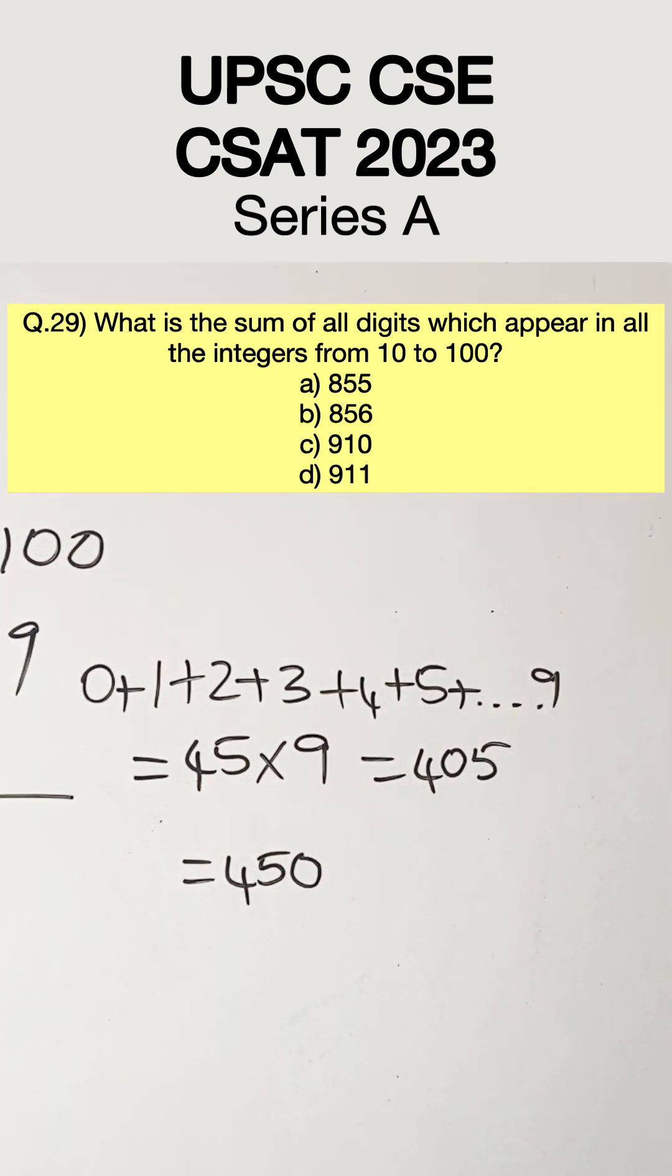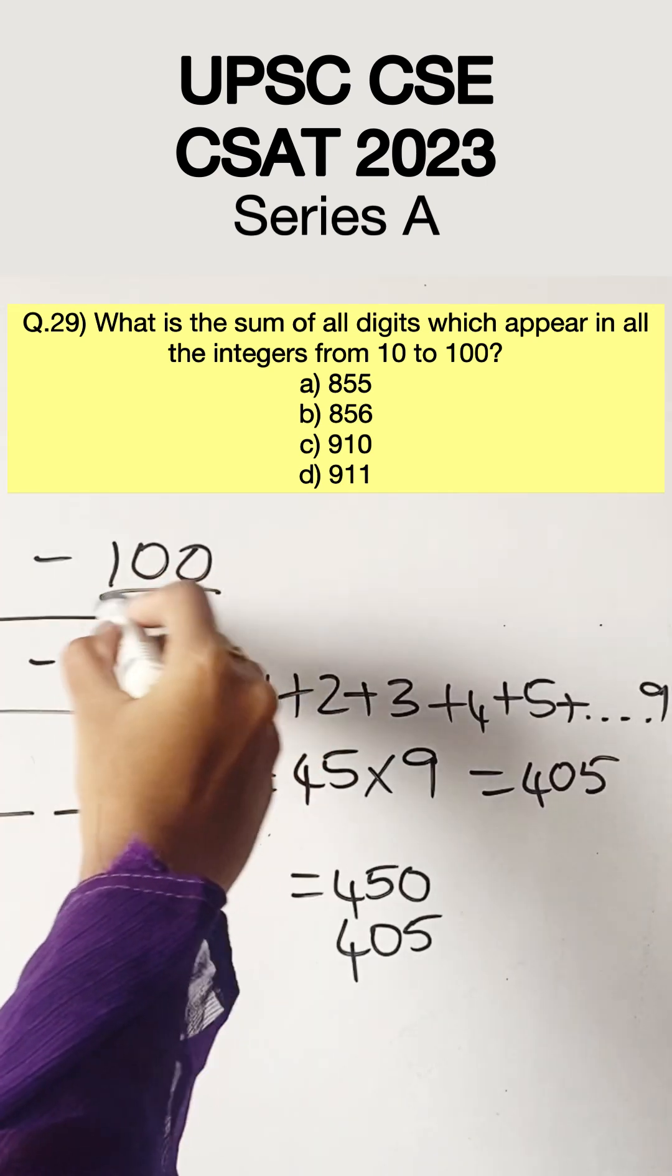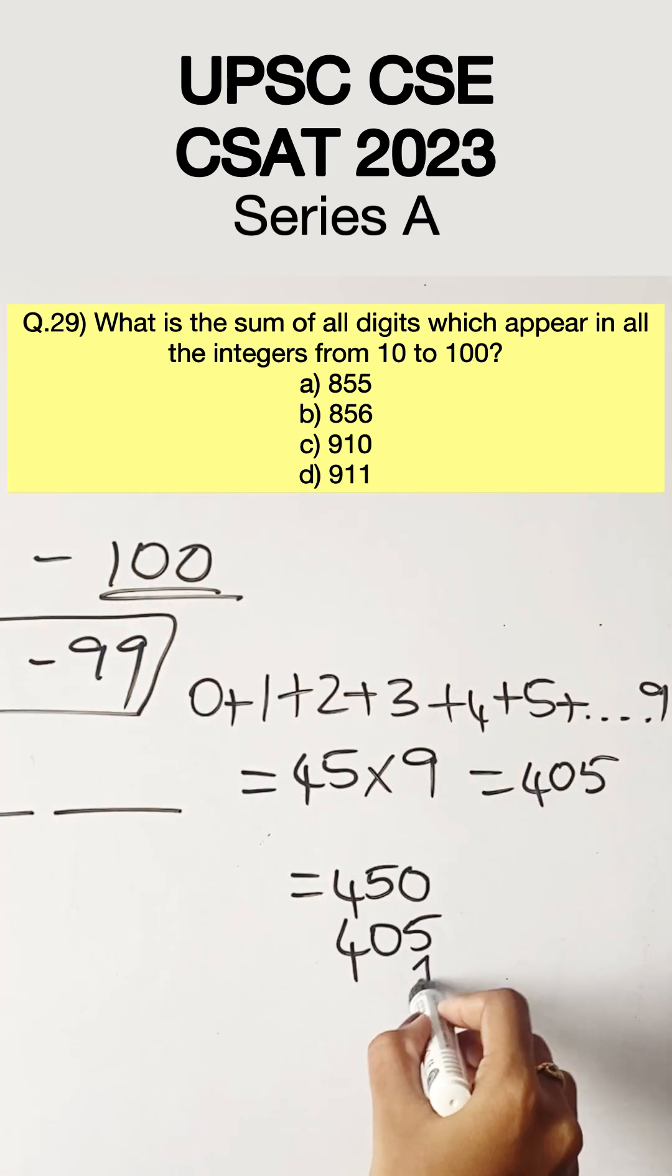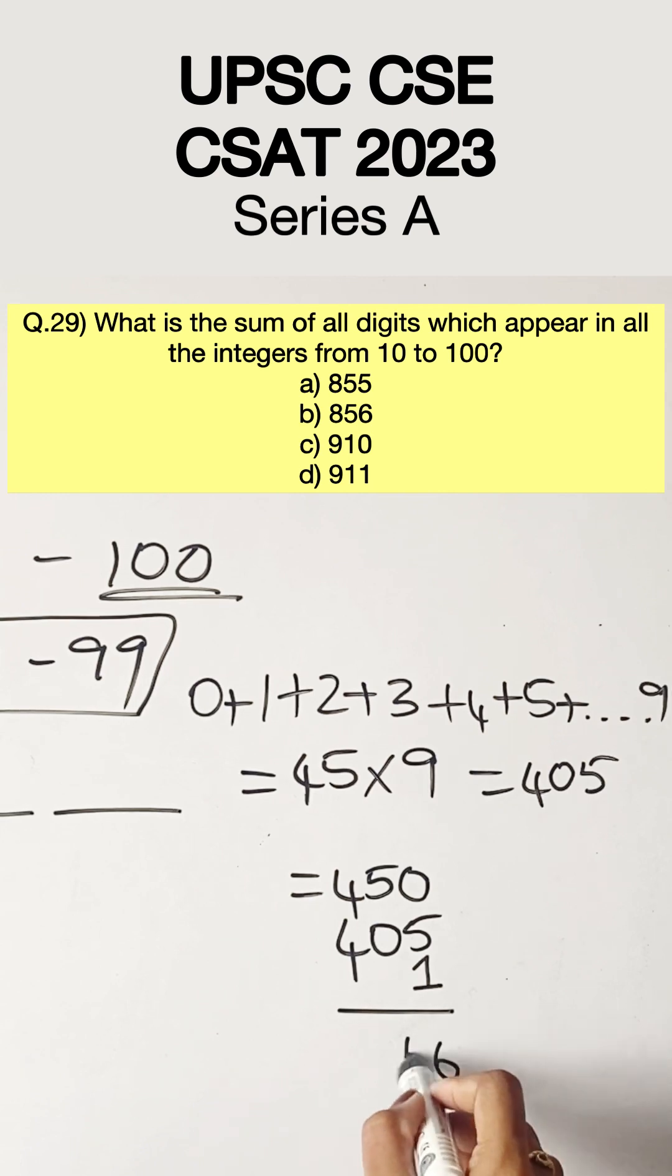Now we have one more value left that is 100. So we have to add 450 plus 405 plus 1 from the 100. We get a total of 856.